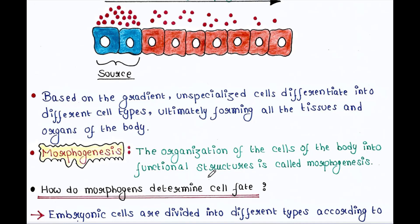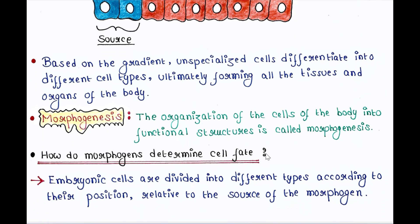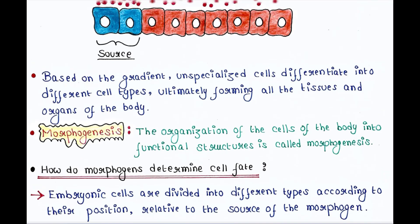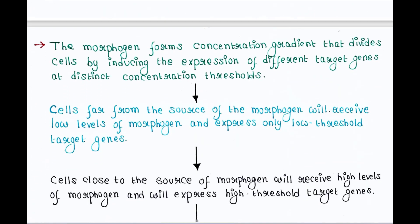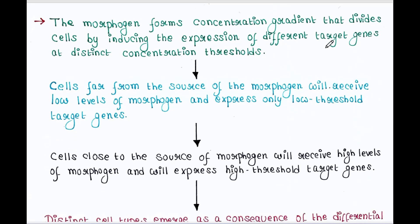The question is: how do morphogens determine cell fate? Embryonic cells are divided into different types according to their position relative to the source of the morphogen. The morphogen forms a concentration gradient that divides cells by inducing the expression of different target genes at distinct concentration thresholds.